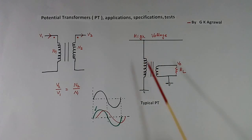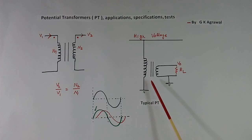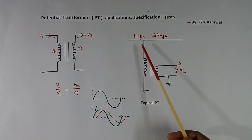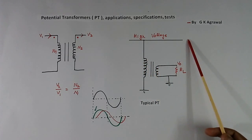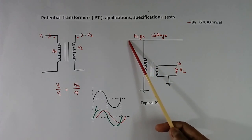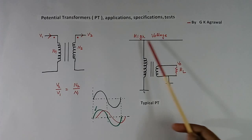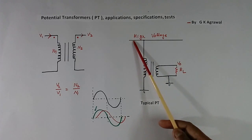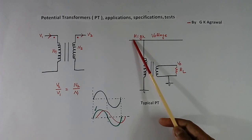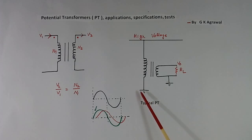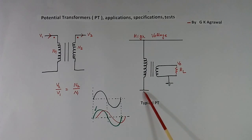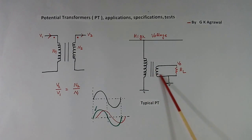Here I have shown one typical PT, electromagnetic type, which is connected to a high voltage line — it may be 10 kV, 50 kV, 100 kV, or 220 kV. This is the primary, and the second terminal is always grounded. This is the core, and this is the secondary.